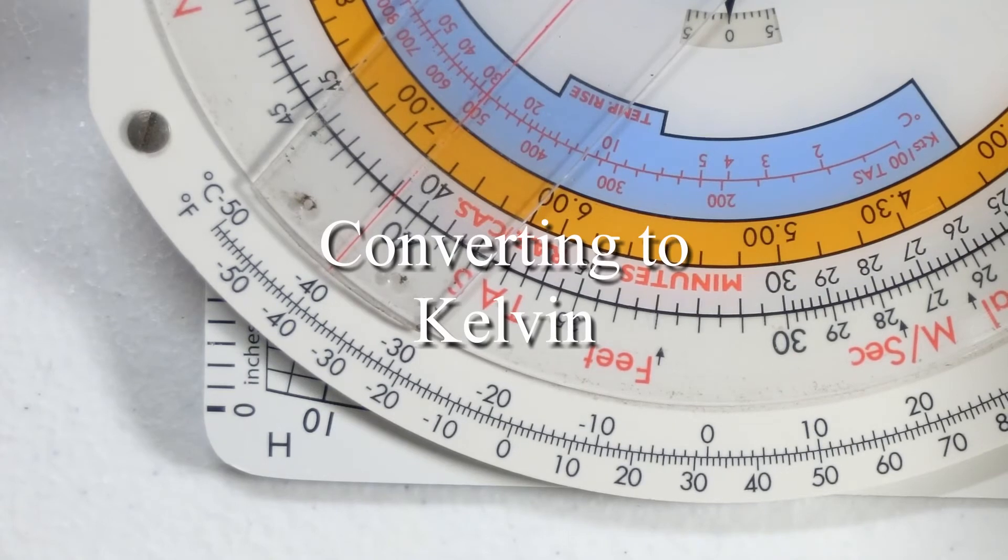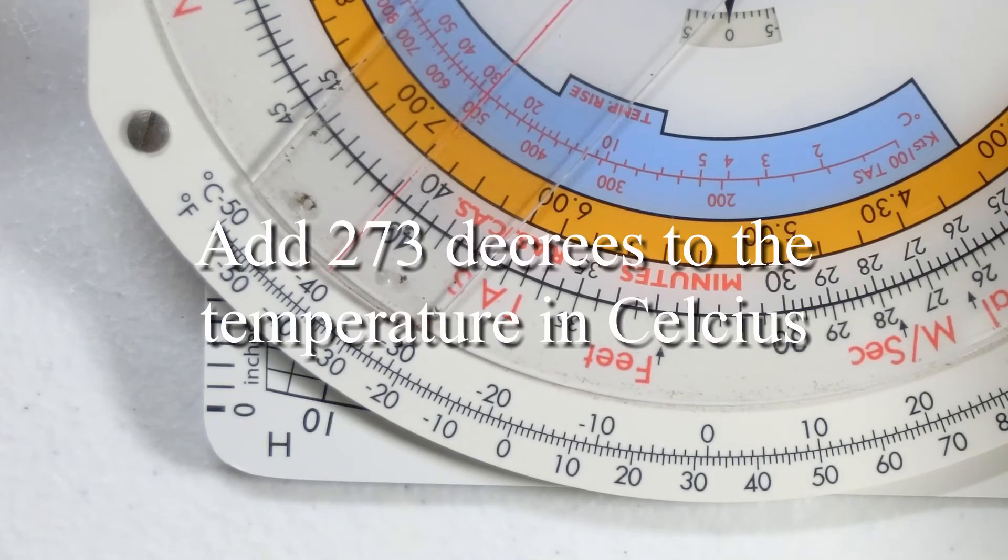The tip to converting Celsius into degrees Kelvin is simply to add 273.